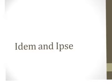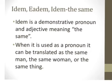In this video, we'll be covering the demonstrative idem and the intensive ipse. The demonstrative idem means 'the same.' This demonstrative is also a pronoun and an adjective. When you use it as an adjective, it would be like 'the same dog,' 'the same book,' and so forth. When you use it as a pronoun, it can be translated as 'the same man,' 'the same woman,' or 'the same thing.'